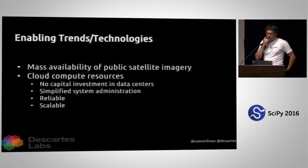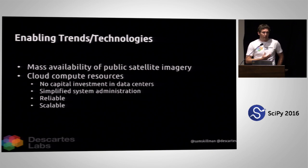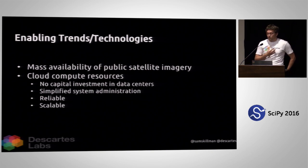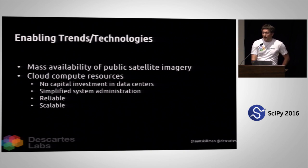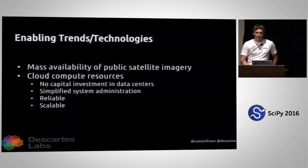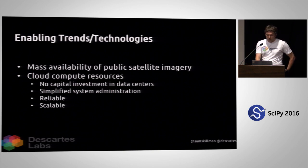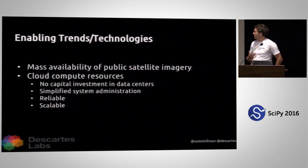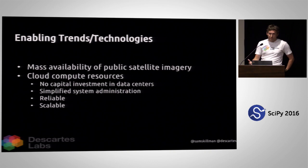So what are we going to do instead? There are a few enabling technologies that allow us to iterate quickly over such a massive dataset. The first is the availability of public satellite imagery. The second key part is access to cloud compute resources. Companies like Amazon and Google have all this excess capacity, which they're happy to sell us at an affordable rate. That means you don't have to invest in capital to start your own data center — it's simple, reliable, and scalable at Google and Amazon scale.